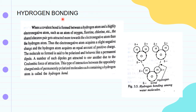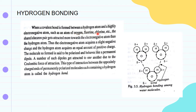Hello students. Today we are going to learn hydrogen bonding. As the name suggests, hydrogen bonding is a bond involving a hydrogen atom and a highly electronegative atom. An electronegative atom has a high affinity towards electrons. The examples of electronegative atoms are oxygen, fluorine, and chlorine.